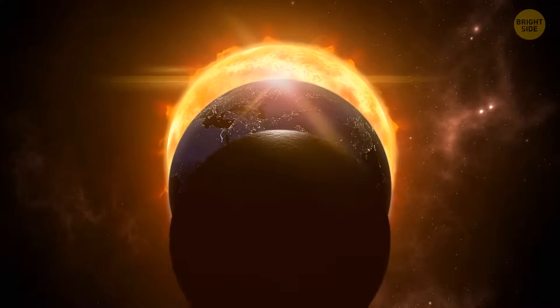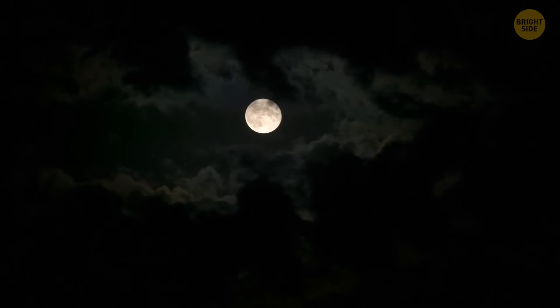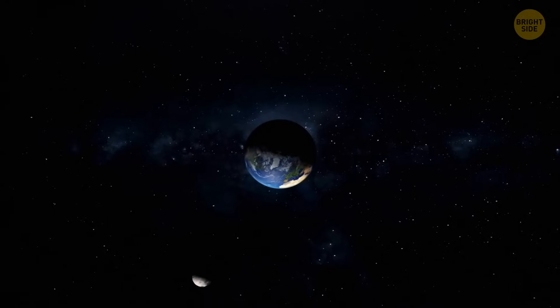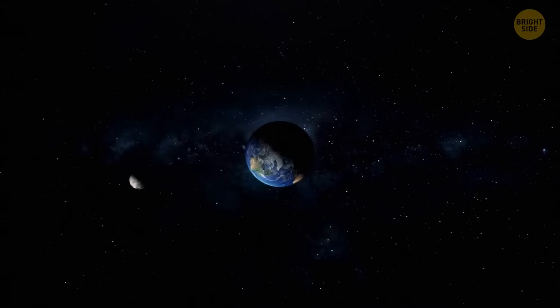For example, a new moon is when it's completely dark in the sky. A full moon is when its day side is facing the Earth. It takes approximately a month for it to finish one circle around the Earth.